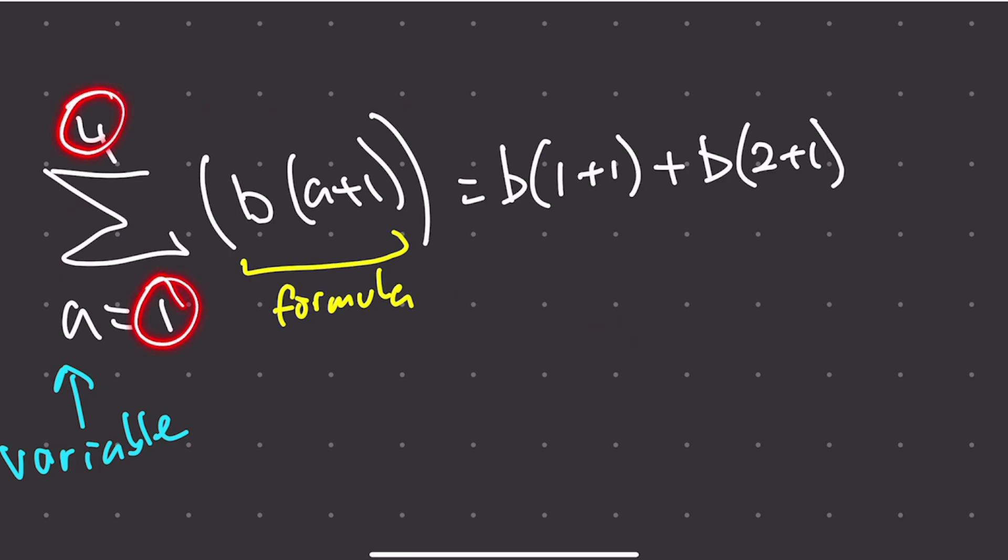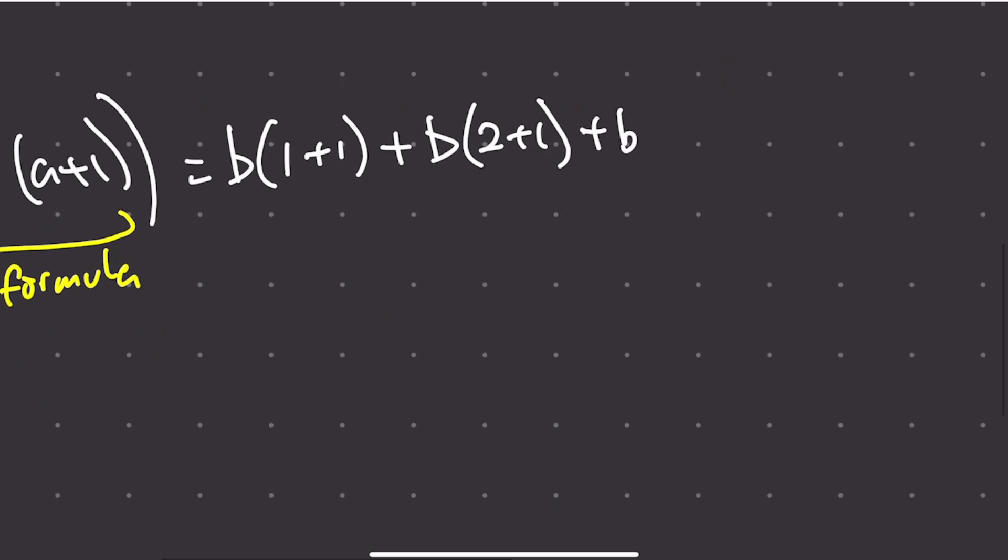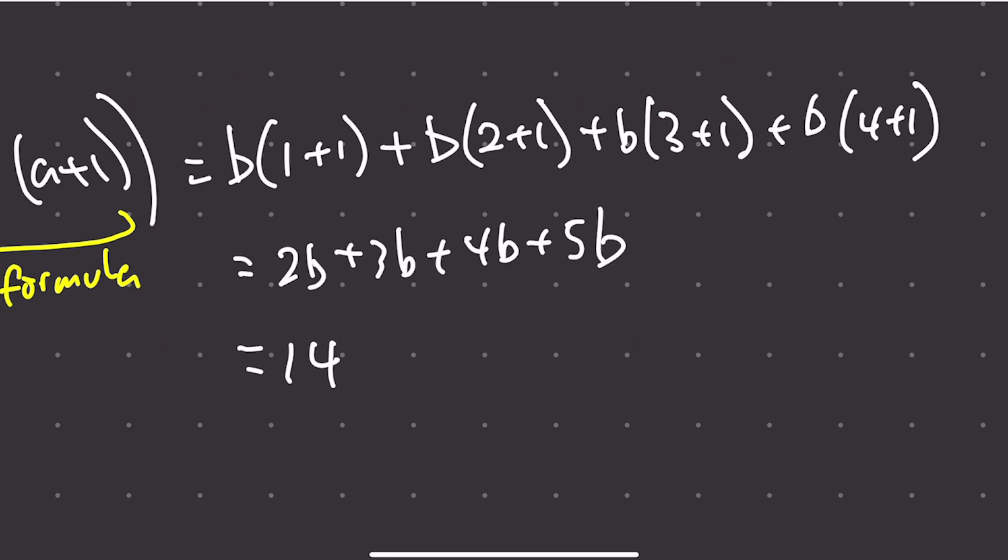So we're starting at 1, and then we're ending at 4. The numbers go up by 1 every single time. So it's going to be 1, 2, and then 3. So 3 plus 1, and then 4. So what this simplifies to is 2B plus 3B plus 4B plus 5B. So your final answer will be 14B.